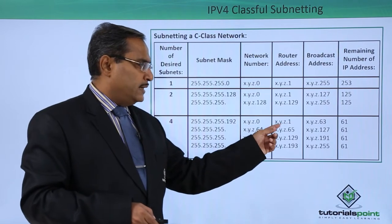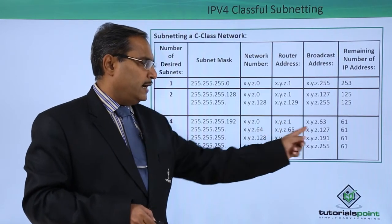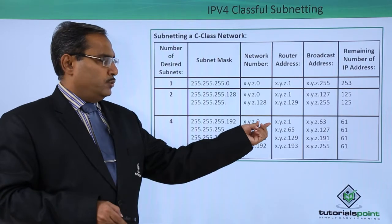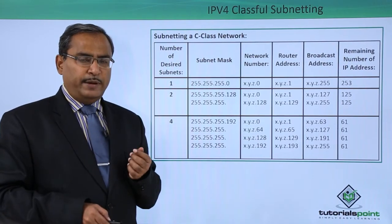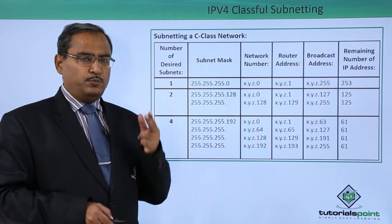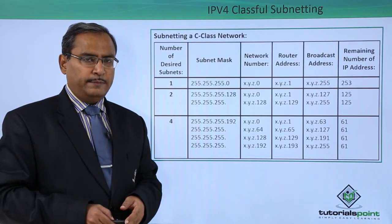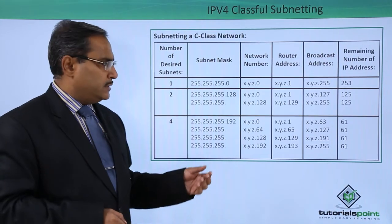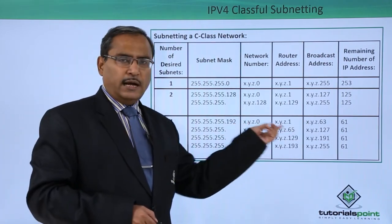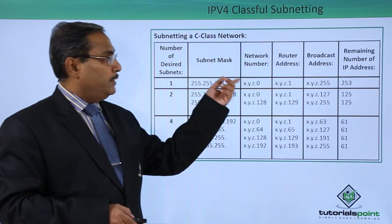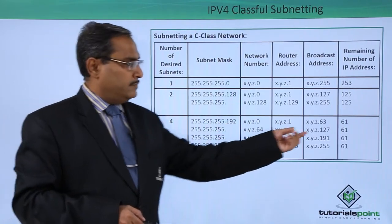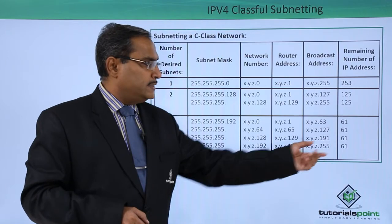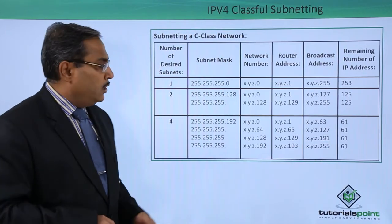For each subnet, the next address after the network number is the router address and the highest address is the broadcast address. With 2 bits used for subnet numbering, 6 bits remain for the host ID, giving 64 combinations. Since 3 addresses are used for the network number, router address, and broadcast address, the remaining number of usable IP addresses will be 61 for each subnet.